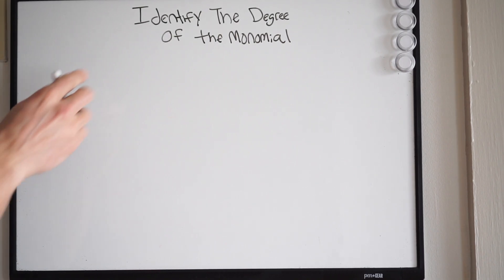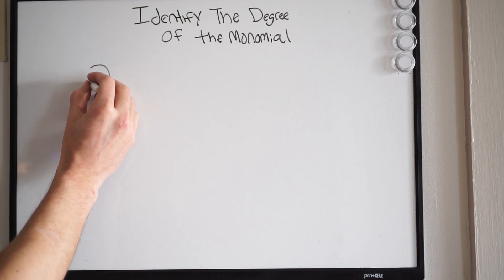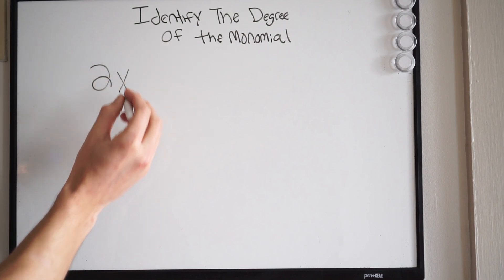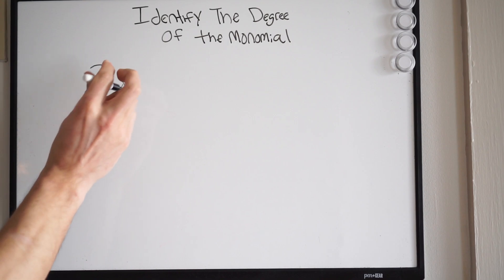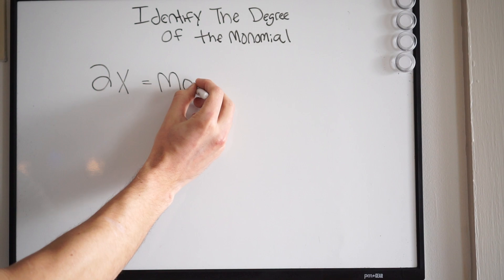Okay, so a monomial, that's simply just going to be one term. So here we have 2x. Notice how we have one term here. This would be considered a monomial.